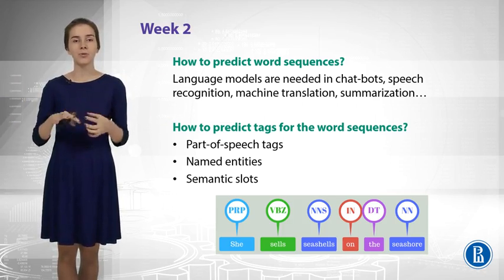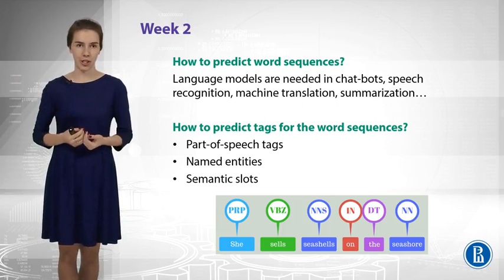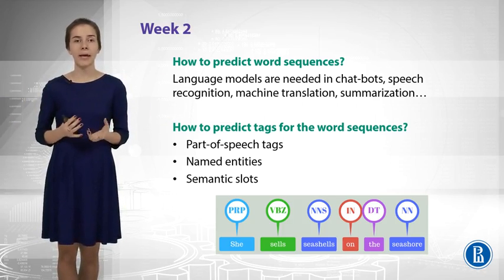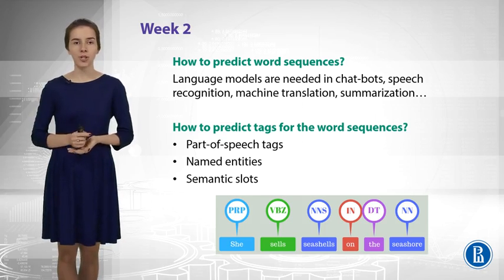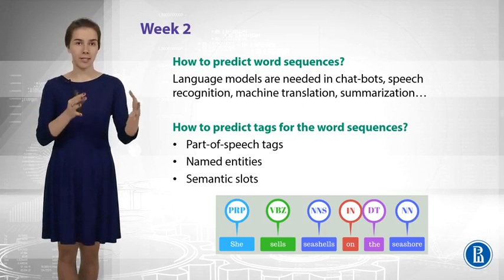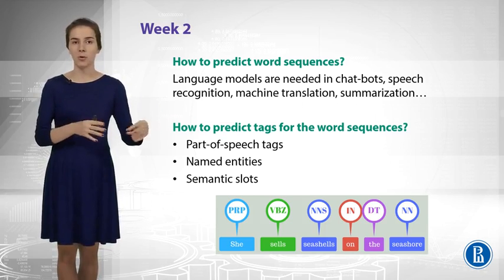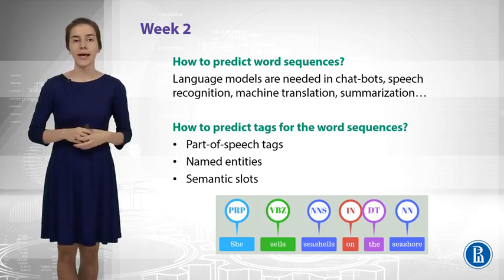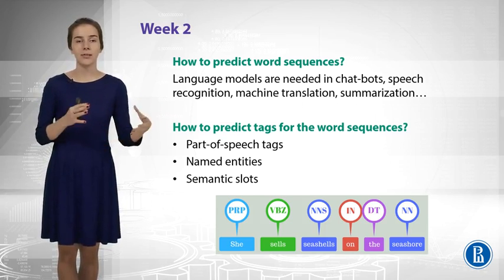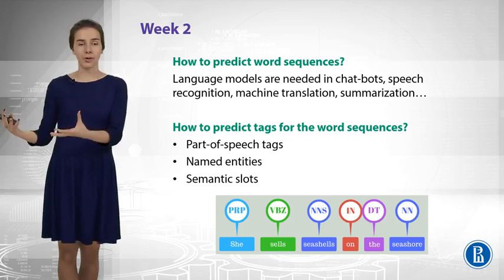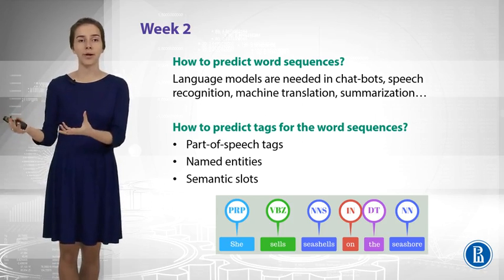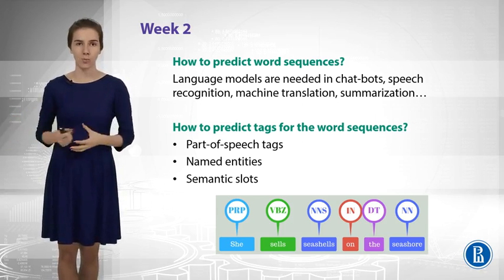This can be used to do text generation, and this is useful in many applications. For example, if you do machine translation, you are given some sequence of words — some sentence in English — and then you need to translate it, let's say, to Russian, so you need to generate some Russian text. And that is where you will need a language model.